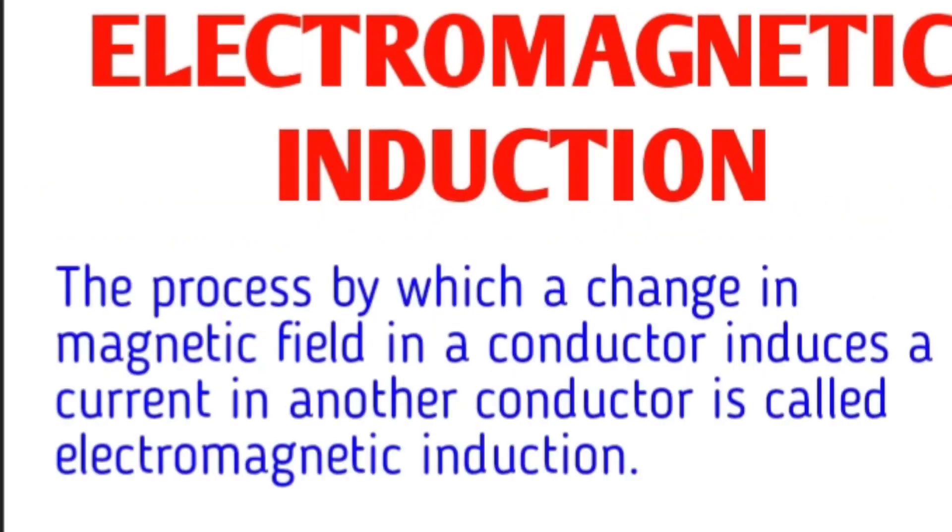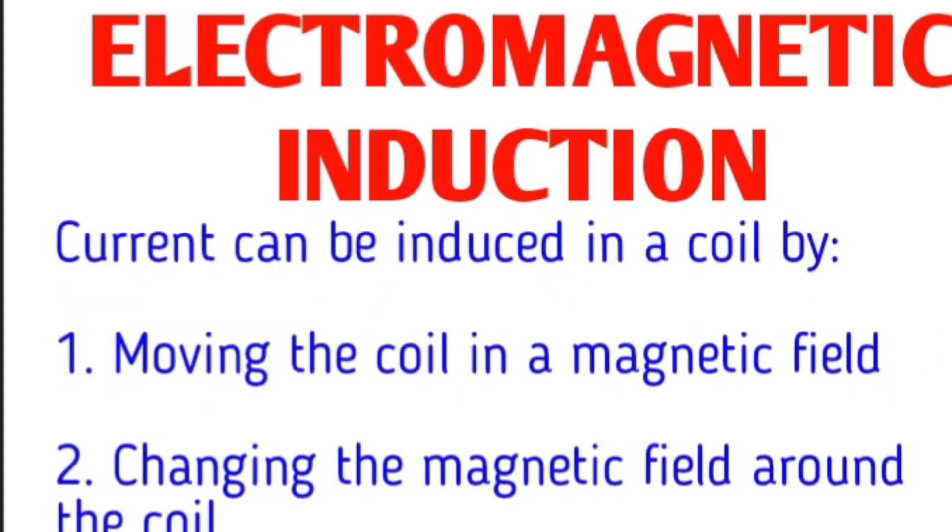This he called electromagnetic induction. What is it? The process by which a change in magnetic field in a conductor induces a current in another conductor. This is called electromagnetic induction. This can be induced by two ways: first, by moving the coil in a magnetic field, or else changing the magnetic field around the coil. These are the two ways by which you can induce current in a coil. This finding led to so many other inventions, including the breakthrough invention of the generator.